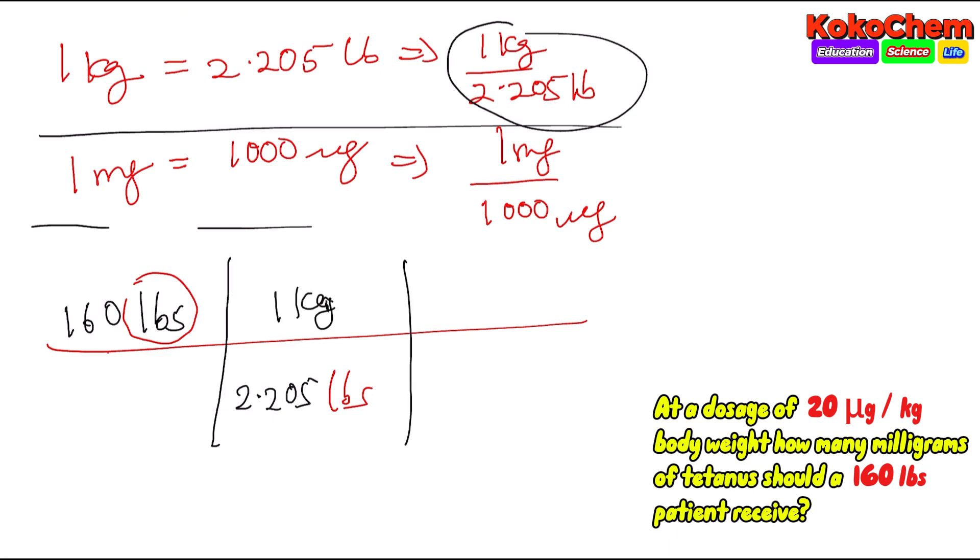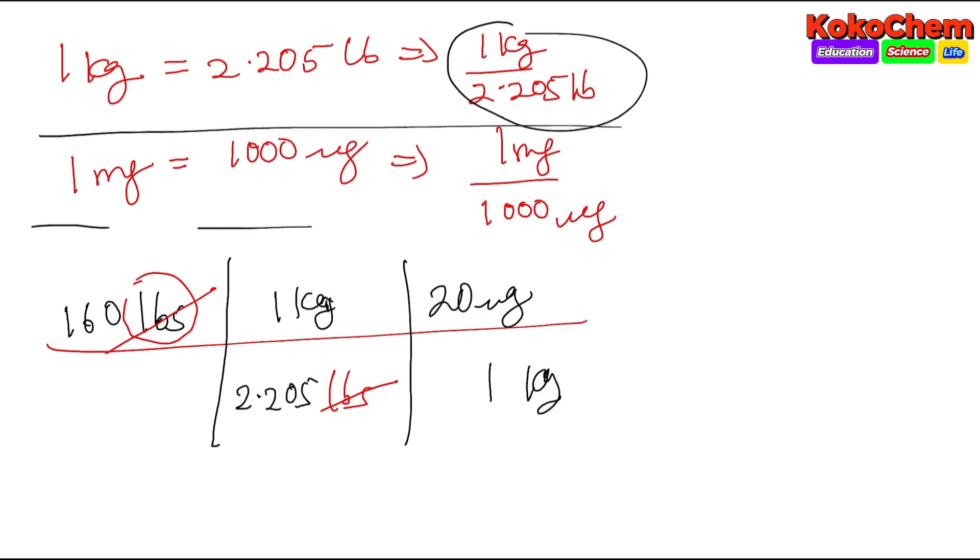Put kilogram at the bottom and from the question, one kilogram equals 20 microgram of tetanus. Kilogram at the bottom will cancel out kilogram at the top.